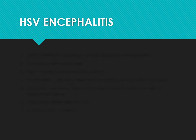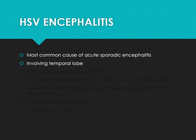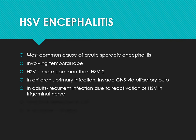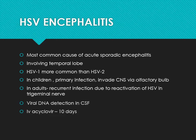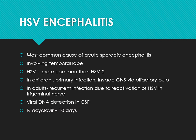HSV encephalitis is the most common cause of acute sporadic encephalitis. It generally involves the temporal lobe — this is an important MCQ point. HSV-1 is more common than HSV-2. In children, primary infection reaches the CNS through the olfactory bulb. In adults, the virus remains in the trigeminal ganglia in a latent form, and whenever immunity goes down, reactivation occurs. We can detect viral DNA in the CSF, and for treatment, acyclovir can be given.